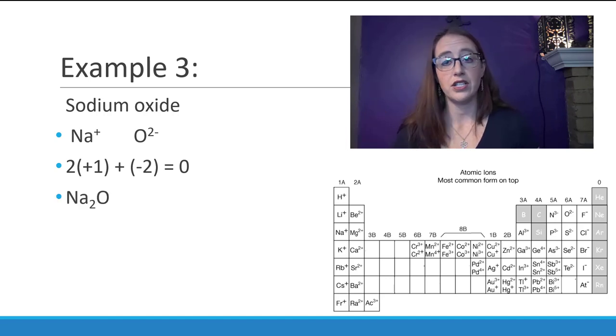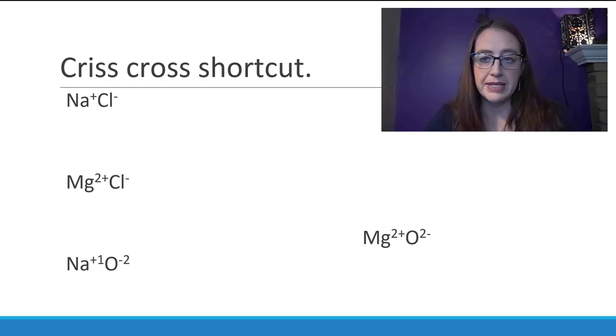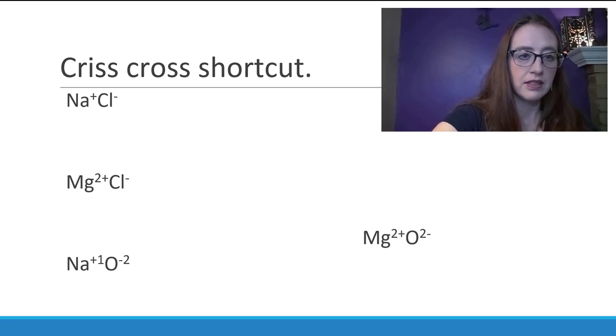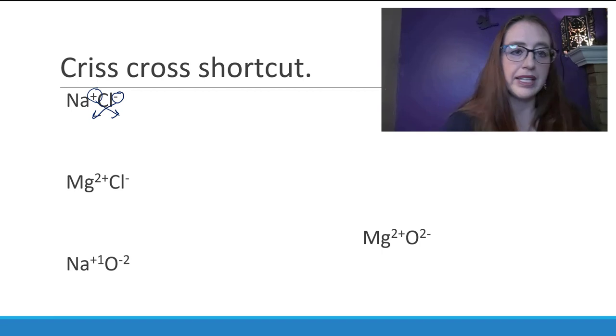There is a shortcut to doing these problems that is a handy trick for completing them very quickly. Let's redo each of the problems that we did before using what I'll call the crisscross shortcut. We're going to add one more to the list as well to show you an example of where you would need to be very, very careful using this trick. So the charge from each ion is going to go down as a subscript to the other ion.